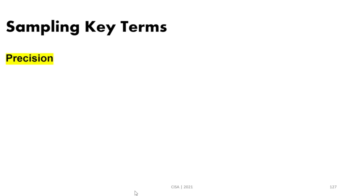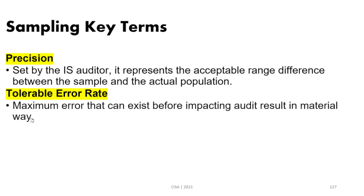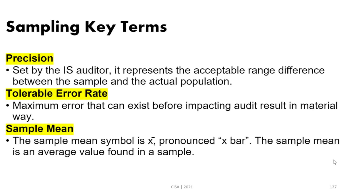Precision represents the acceptable range of difference between the sample and the actual population, and it is set in advance by the IS auditor. Tolerable error rate is the maximum number of errors that can exist before impacting the audit result in a material way — errors are acceptable up to a certain level, beyond which the sample no longer truly represents the actual population. Sample mean, represented by X-bar, is the average value found in a sample.